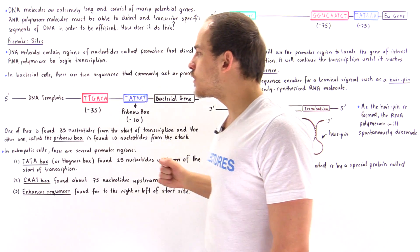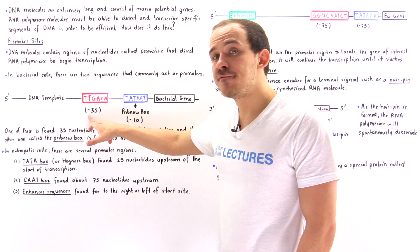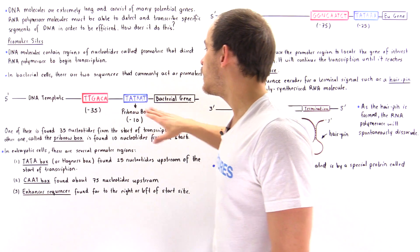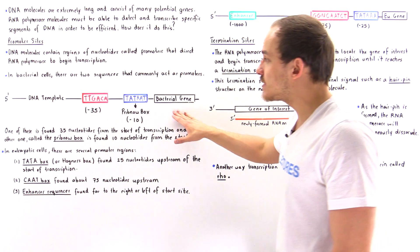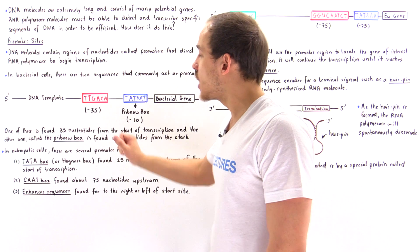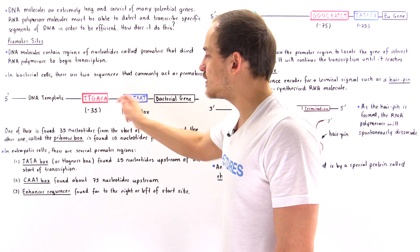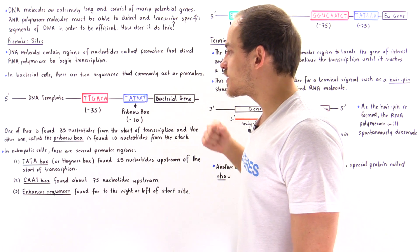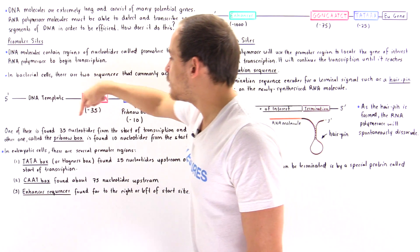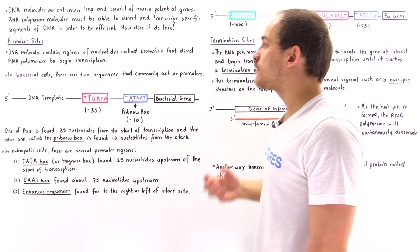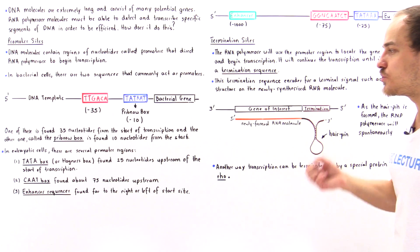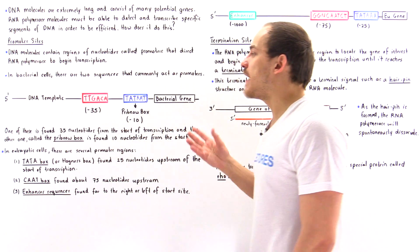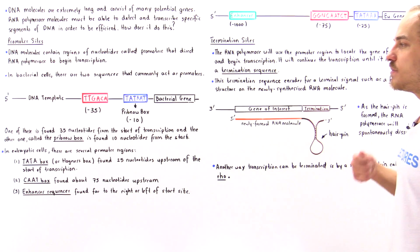We also have another promoter found 35 nucleotides upstream — to the left — of that bacterial gene, and this contains a consensus sequence of TTGACA. So one promoter site is found 35 nucleotides from the start of transcription, and the other, the Pribnow box, is found 10 nucleotides from the start.